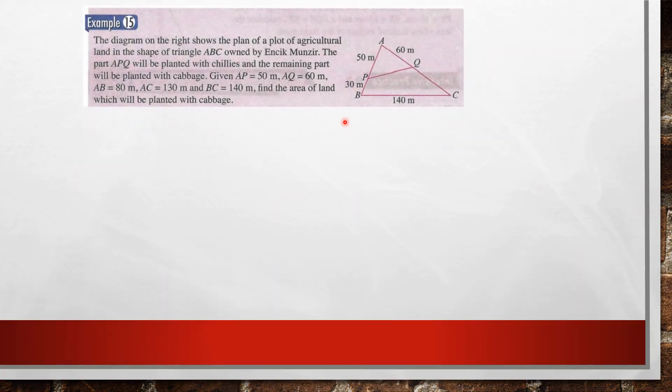Now we look at example 15. You can refer to your textbook. The diagram on the right shows a plot of agricultural land in the shape of triangle ABC owned by Encik Munzeb. The part APQ, this small triangle, will be planted with chilies and the remaining part will be planted with cabbage.